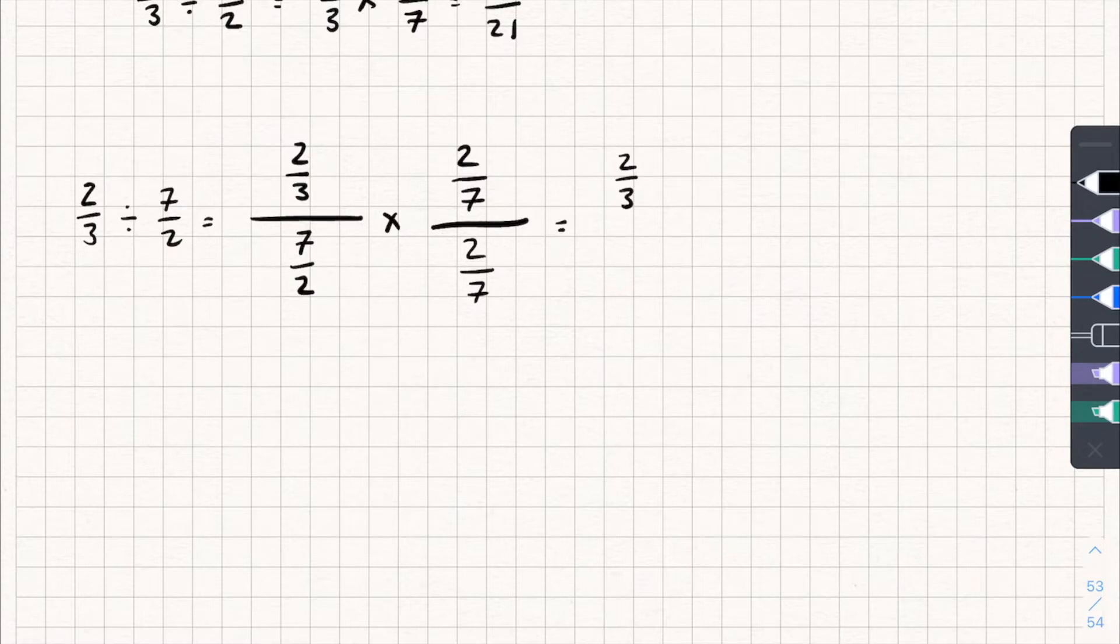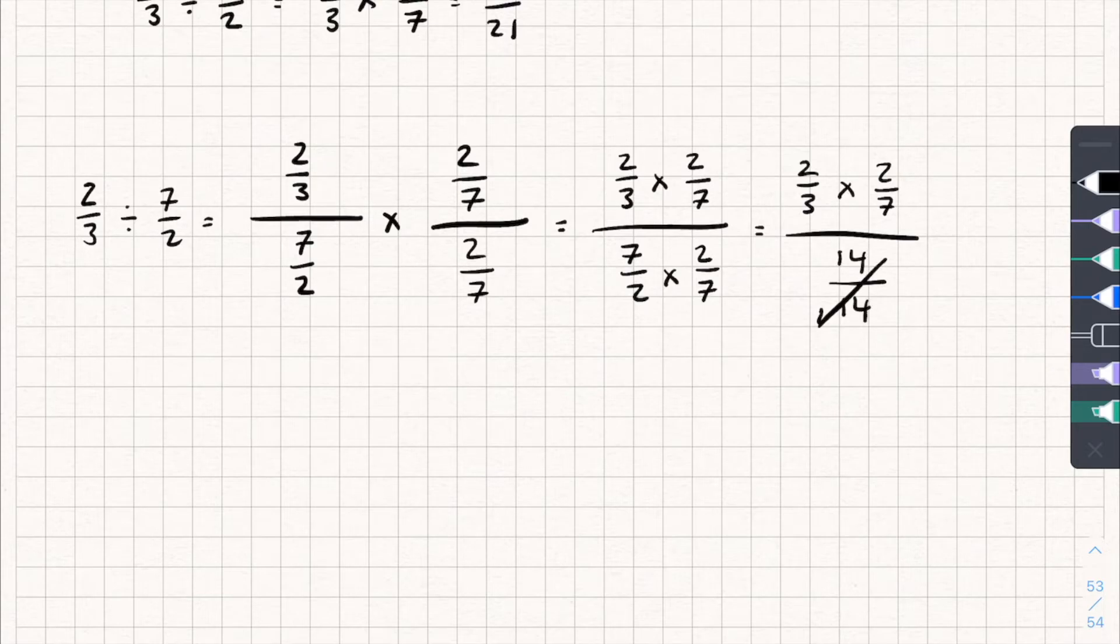We're going to get two over three multiplied by two over seven, all divided by seven over two multiplied by two over seven. And that's all divided by seven times two is 14, divided by two times seven, which is 14. And this now goes to one. So we're left with two over three times by two over seven. And you can see these two things are equal, and that's why we can just flip and multiply when we're dividing fractions.